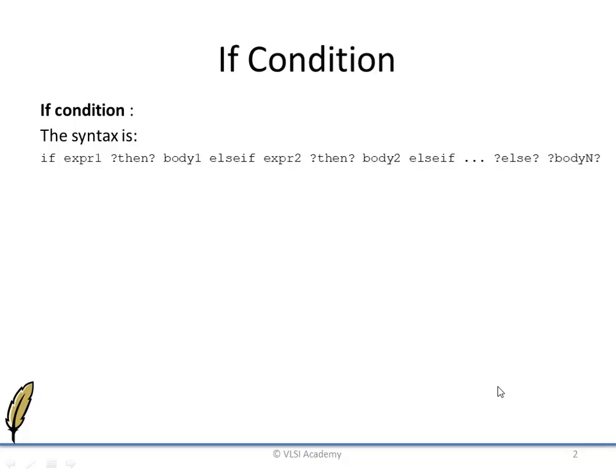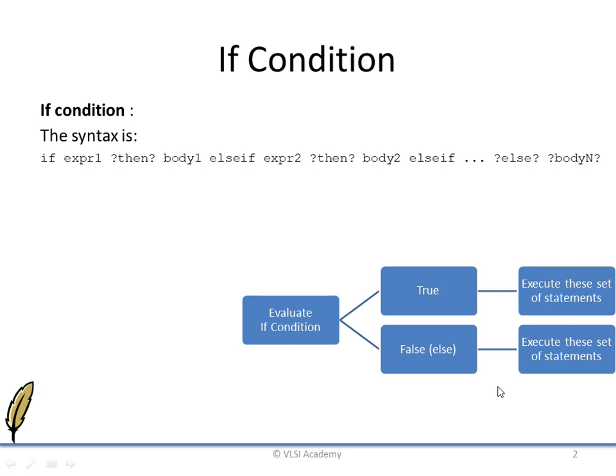The if condition in TCL is similar to how it works in C — if the expression is true or false, it will evaluate and accordingly execute the set of statements. If the expression is true then the upper statement will be executed; if the expression is false then the lower set of statements will be executed.